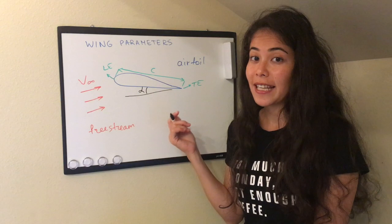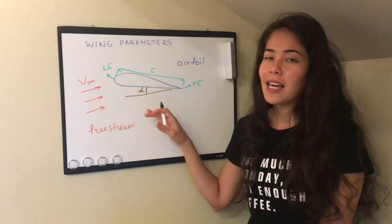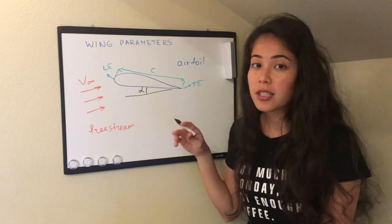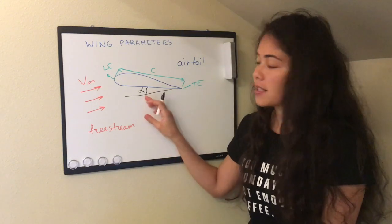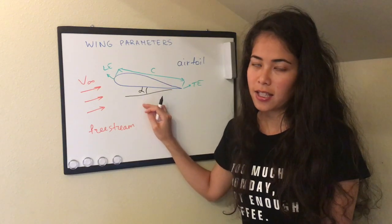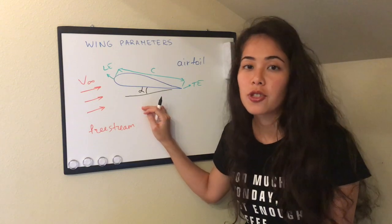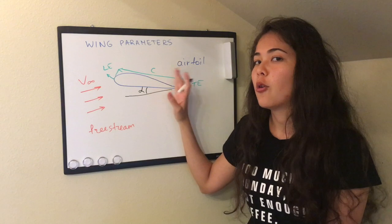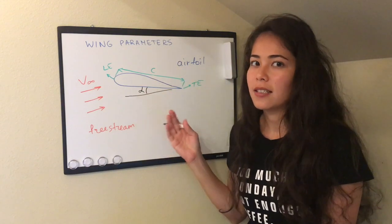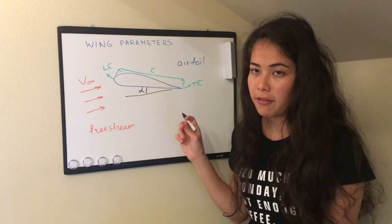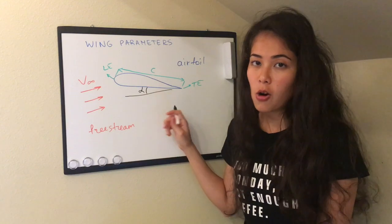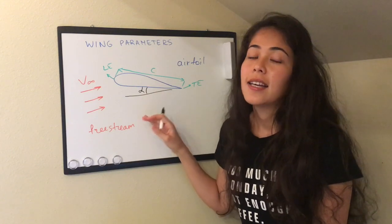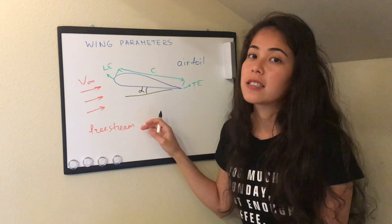In modern aircraft, pilots have a software system installed on the onboard control system which limits the angles of attack that they can go to, especially in passenger aircraft. So even if the pilot wants to go higher, he cannot do that because it will not be safe. We will have another whole video dedicated to angle of attack and how it changes and affects the lift.